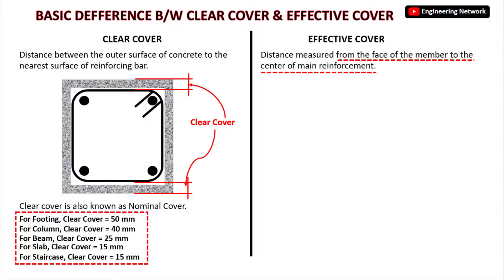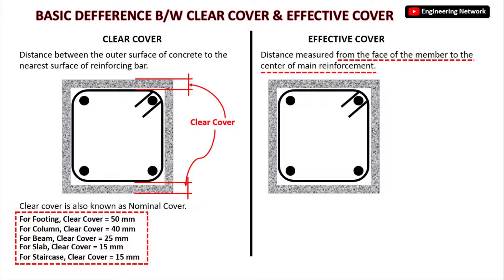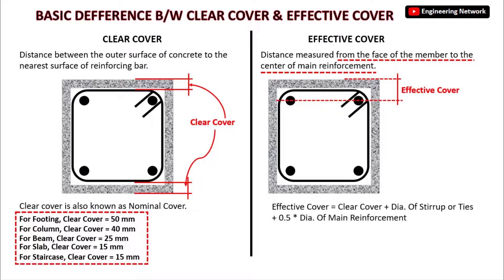If you look at the cross section of the beam, the effective cover will be from the outer edge or outer surface of the beam to the center of the main reinforcement. The formula for effective cover is: Effective Cover = Clear Cover + Diameter of stirrups or ties + 0.5 × Diameter of main reinforcement.